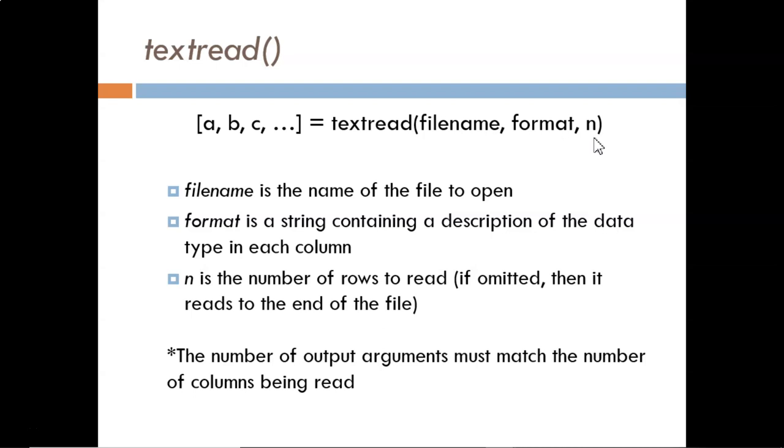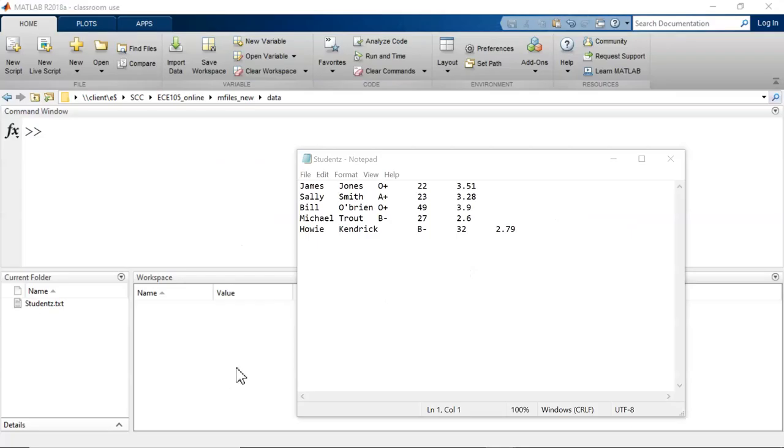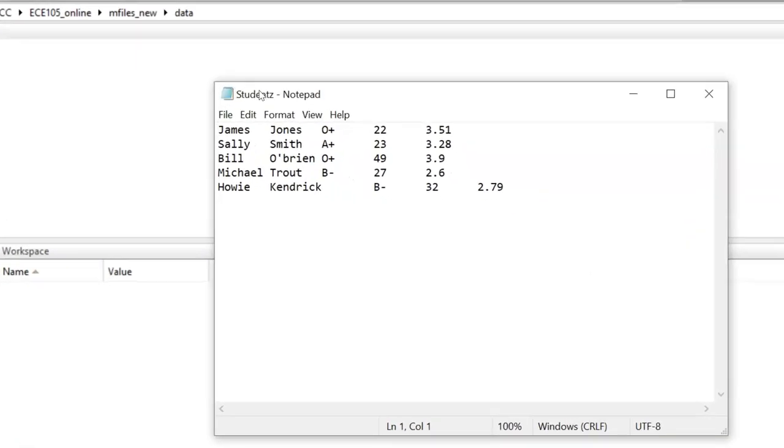And the third input argument indicates how many rows of data to read. The output arguments on the left side will be the variable names for the columns of data that are imported. The length of this list must match with the number of columns being imported. Let's say we have this small data set here. Within the text file, we see columns for each of these five students' first names, last names, blood type, age, and GPA.